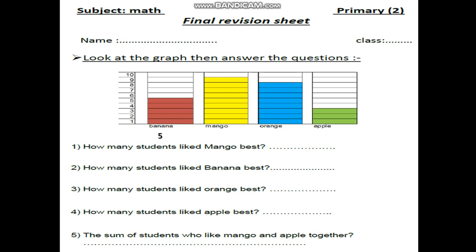Mango — count and write. They are 9. Orange, they are 8. Apple, they are 3.